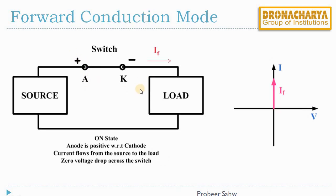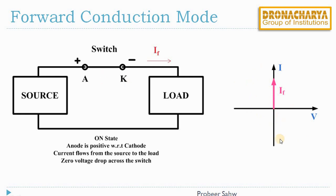The next mode is forward conduction mode. In this mode, the anode is at higher potential than the cathode and the switch is closed. Due to this, the load draws certain current from the source and there will be no voltage drop across this switch. We can see in the VI characteristics there is only forward current, with no voltage in the forward or reverse direction and no current in the reverse direction.